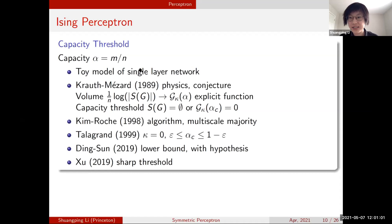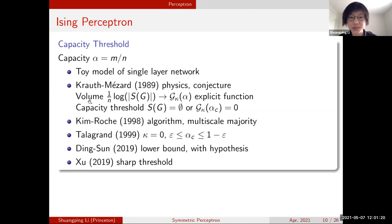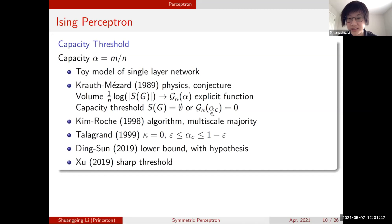We define capacity alpha as the rate m over n. The name capacity comes from the fact that the perceptron is originally a toy model of a single-layer network. In the physics literature in the 80s, people computed that one over n times the log of the size of the solution set converges to an explicit function g_kappa of alpha. They predicted the existence of a capacity threshold alpha_c: above it there is no solution with high probability, below it there is a solution with high probability.